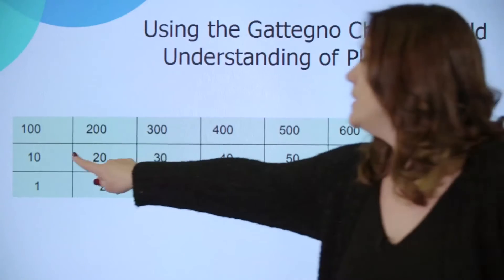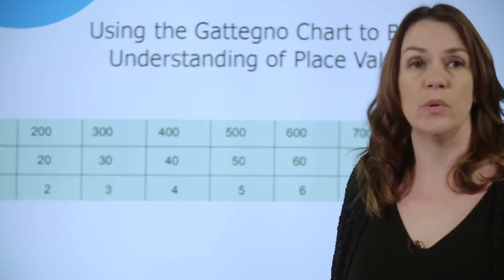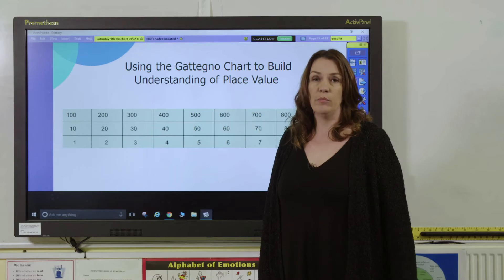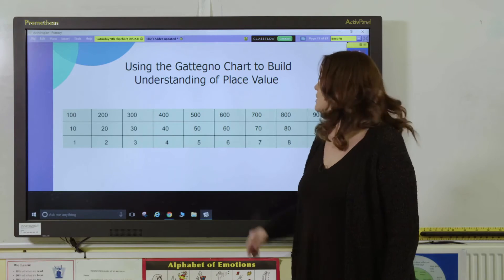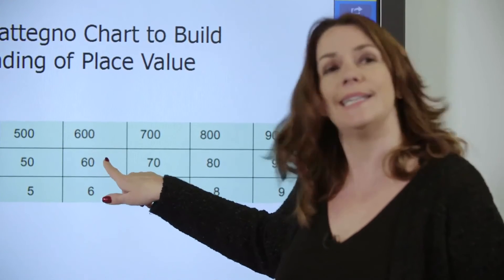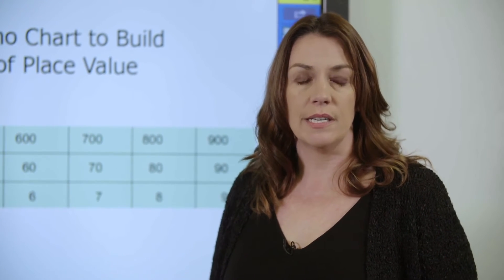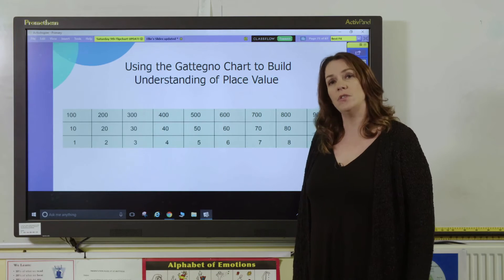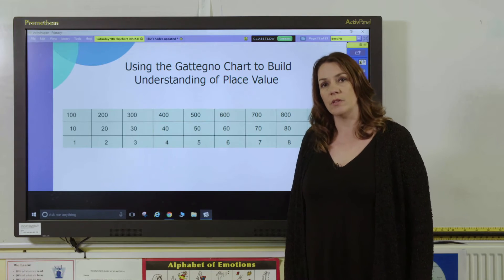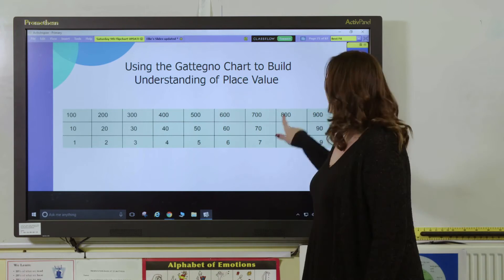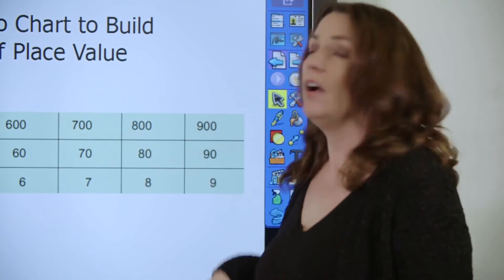For example, if I point to ten and one, pupils would need to say eleven. You could move on to three-digit numbers. For example, if I point to 500 and 60 and seven, they would then need to say the number 567. You could use the chart to explore what happens when you cross a tens boundary. If I point to 800 and then 80 and nine, then children would need to say 889. And you can challenge them to say, well, what's the next number in the sequence? What happens if I add one more?